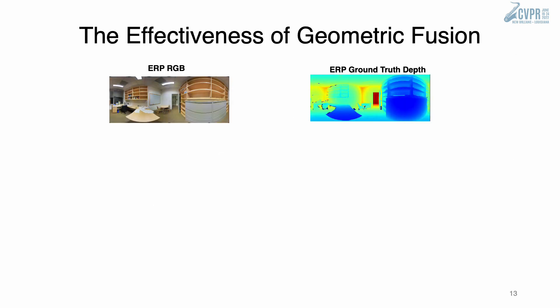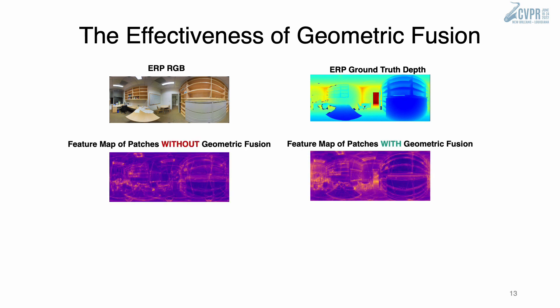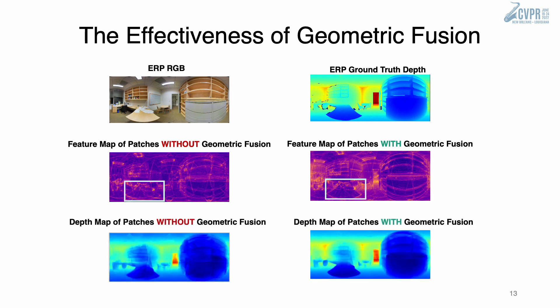Here we demonstrate the effectiveness of geometric fusion in solving discrepancies. Without geometric fusion, the extracted feature map shows severe artifacts. Less artifacts are displayed with geometric fusion. The object boundaries are much clearer in the highlighted areas with geometric embedding. We observe similar results on the merged depth map. With geometric embedding, the depth map is smoother, cleaner, and much more consistent.